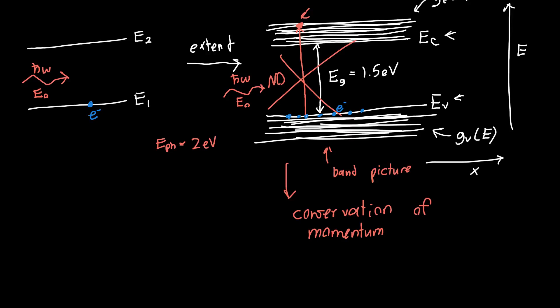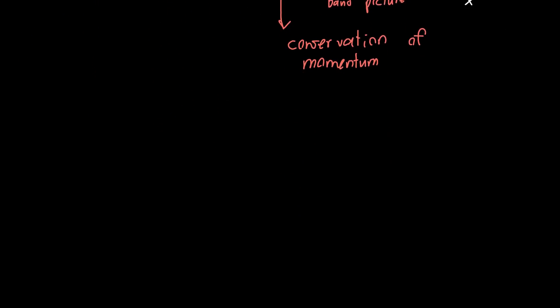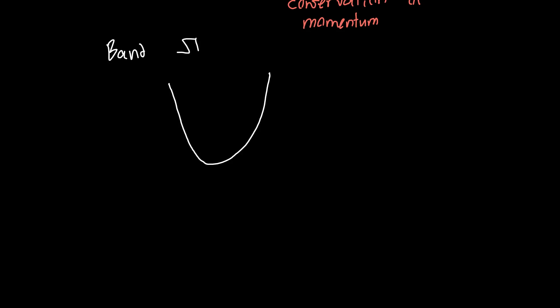We've largely been ignoring momentum up to this point, but actually each one of these energy levels in the valence band and each one of these energy levels in the conduction band also has a certain momentum, a specific momentum. And we can draw out what that momentum looks like using what's called the band structure.